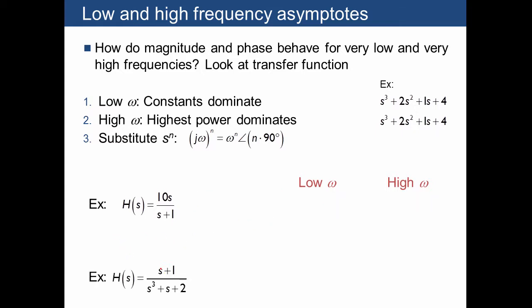Here's another example. H of S is equal to S plus 1 over S cubed plus S plus 2. We'll plug in low frequencies, which means we get to ignore all of these low terms, and what we end up with is 1 half at an angle of 0 degrees.